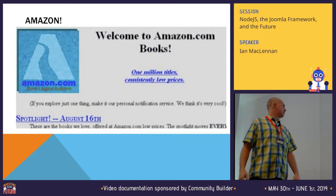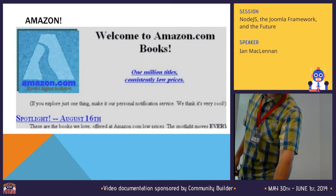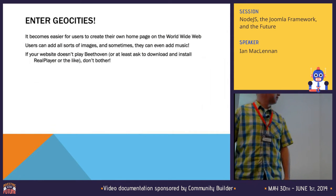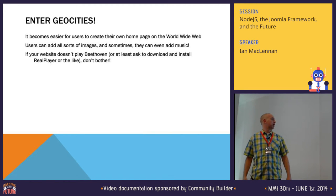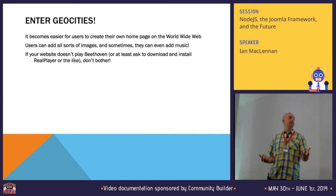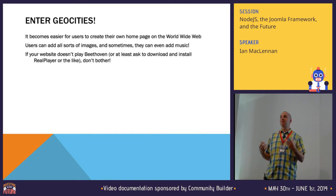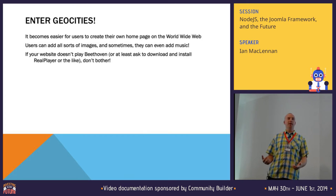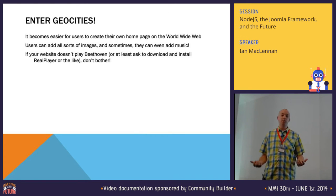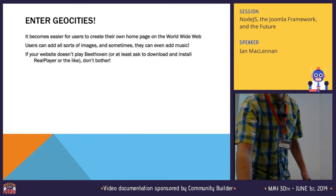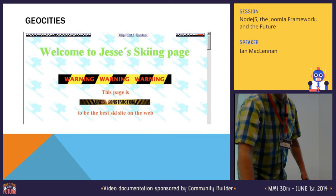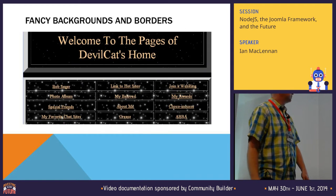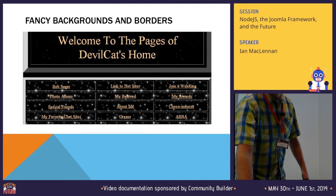A flashback of Amazon circa a long, long time ago. Enter GeoCities — it becomes easier for users to create their own homepage on the World Wide Web. You can add images easier, and sometimes you can even add music. I mean, if your website does not play Beethoven or at least ask you to download and install a plugin like RealPlayer, don't bother, right? Here's a GeoCities gem I came across — you can add fancy backgrounds and borders and all that sort of fun stuff.